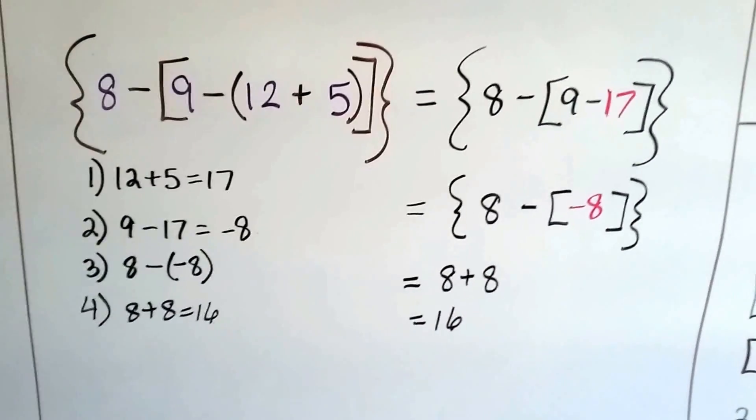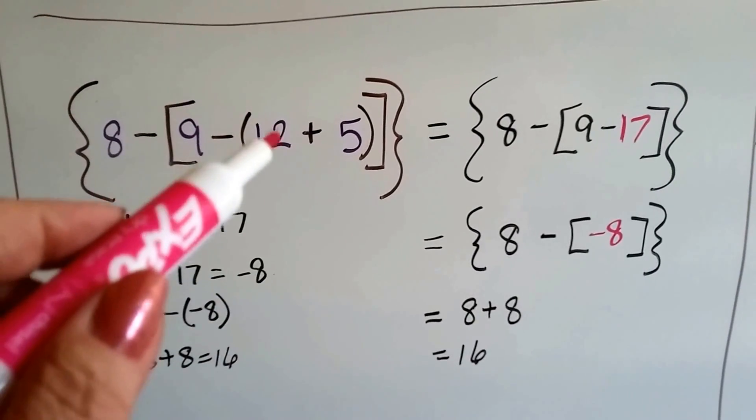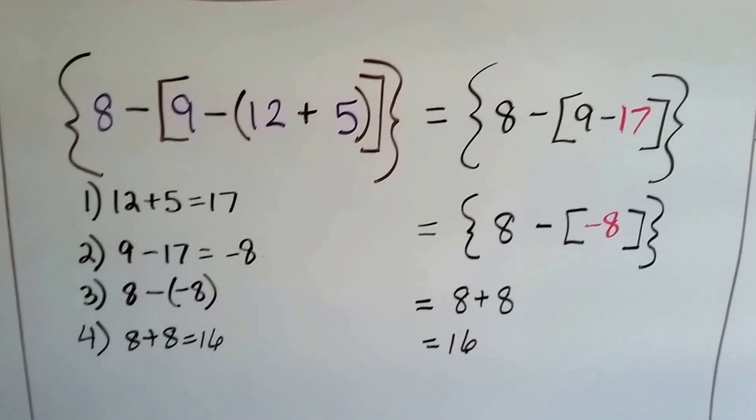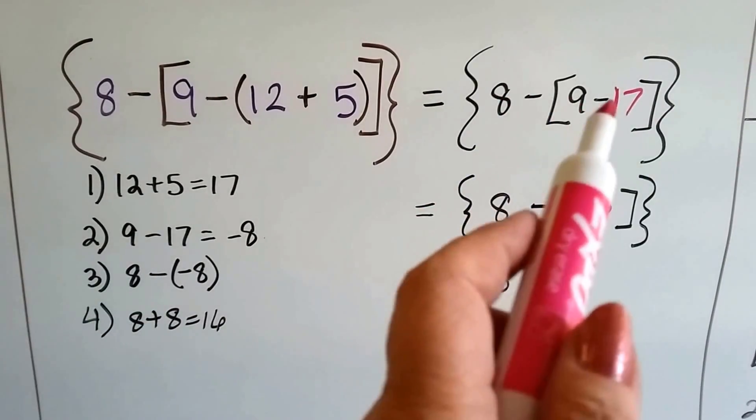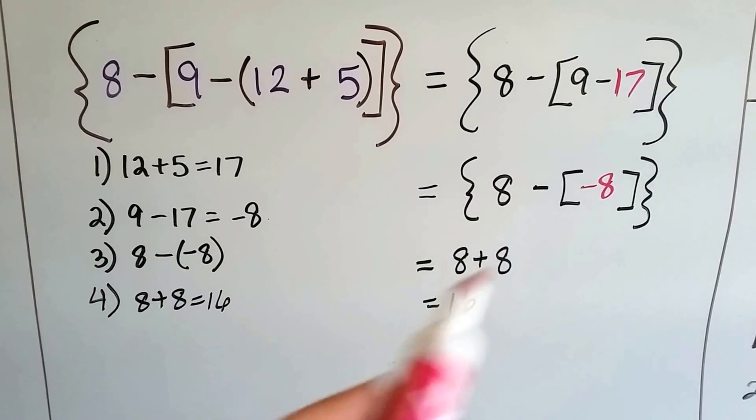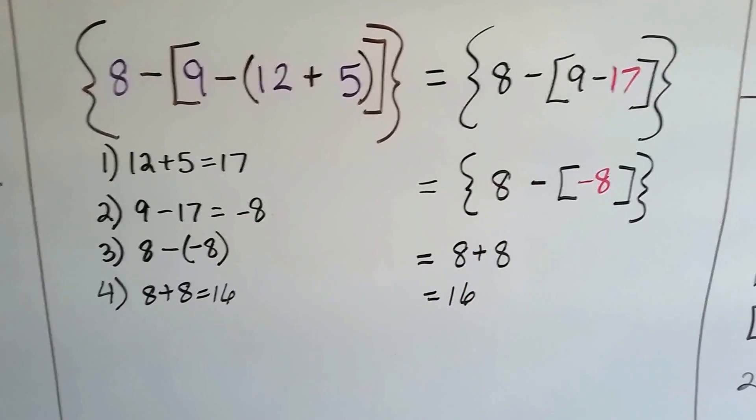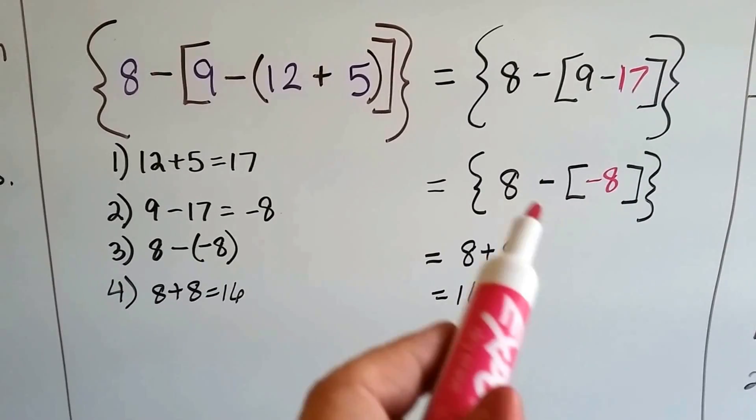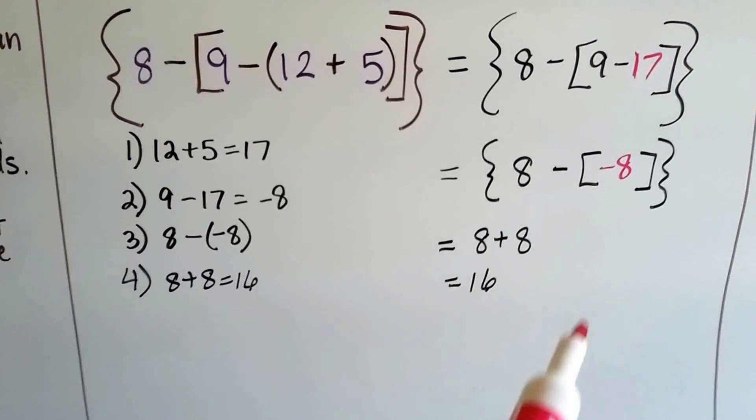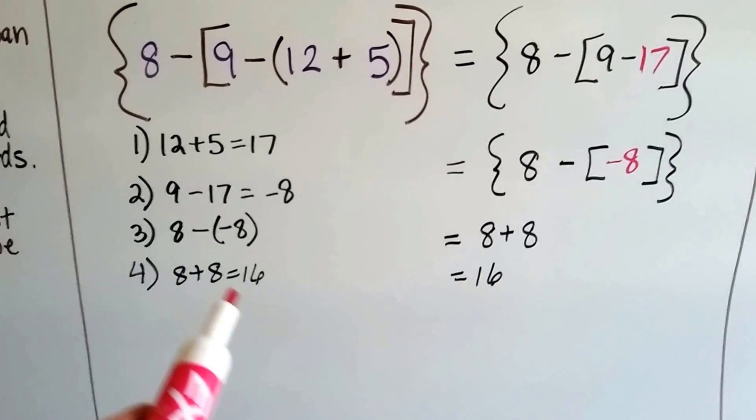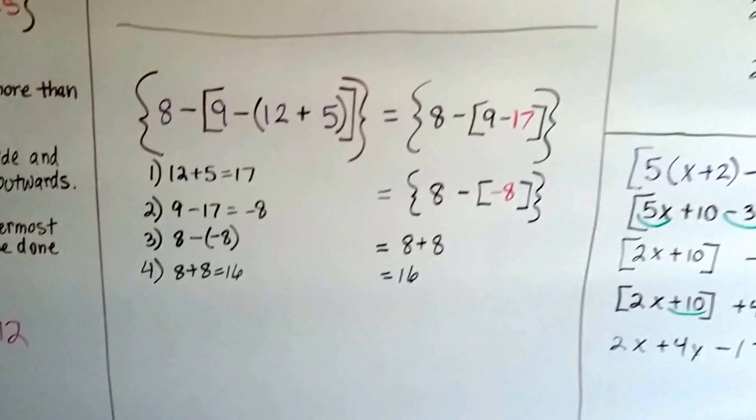Let's try this one. We've got braces with an 8 minus brackets, 9 minus a 12 plus 5 in parentheses. First thing we do is the 12 plus 5. That's 17. Now we've got 8 minus 9 minus 17. Now we do the 9 minus 17 and get a negative 8. So now we have 8 minus negative 8. Remember, when we subtract a negative, we add the opposite. So this is going to turn into an addition sign. So now we've got 8 plus 8, and that's 16. We worked our way outwards.